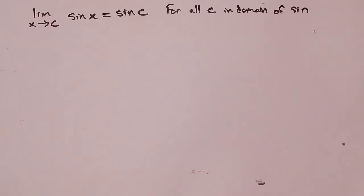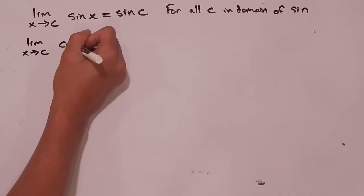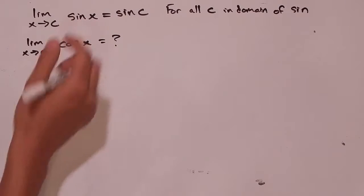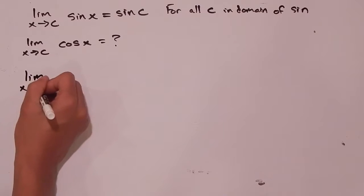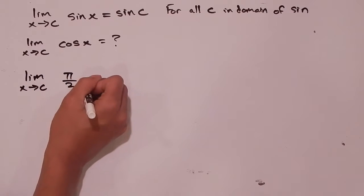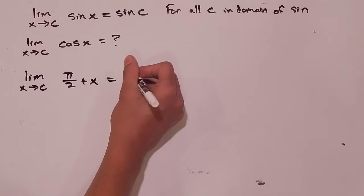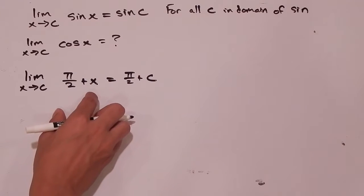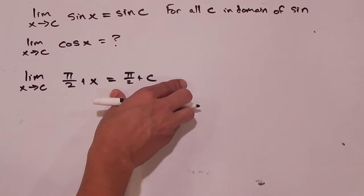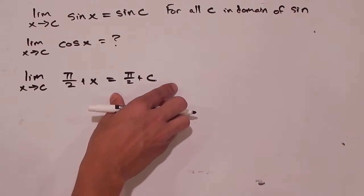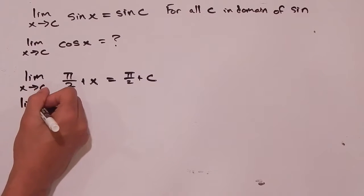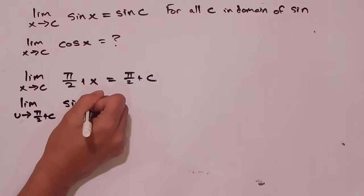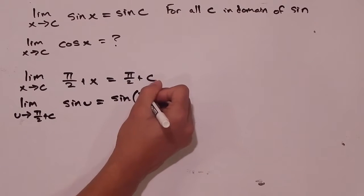Based on that, we're going to see what is the limit as x goes to c of cosine of x. We know from our limits that the limit as x goes to c of π/2 plus x is equal to π/2 plus c. We can just use our sum rule: the first limit will be that of a constant, so we just get π/2 back, and then the limit as x goes to c of x is just c. We also know, based on our assumption, that the limit as u goes to π/2 plus c of sine of u is equal to sine of π/2 plus c.